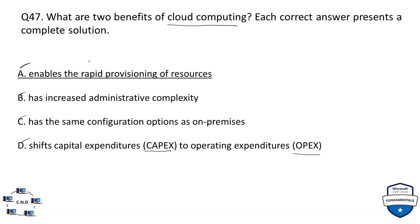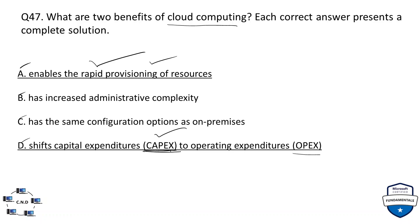The cloud enables rapid provisioning of resources because we don't need to install cables or provision cooling infrastructure — all that is handled by the cloud provider. We can spin up and provision resources very rapidly, in seconds, with just a few clicks. We also don't need to invest capital expenditure on hardware such as servers; instead we incur operational expenditure charged based on the resources or VMs we use.